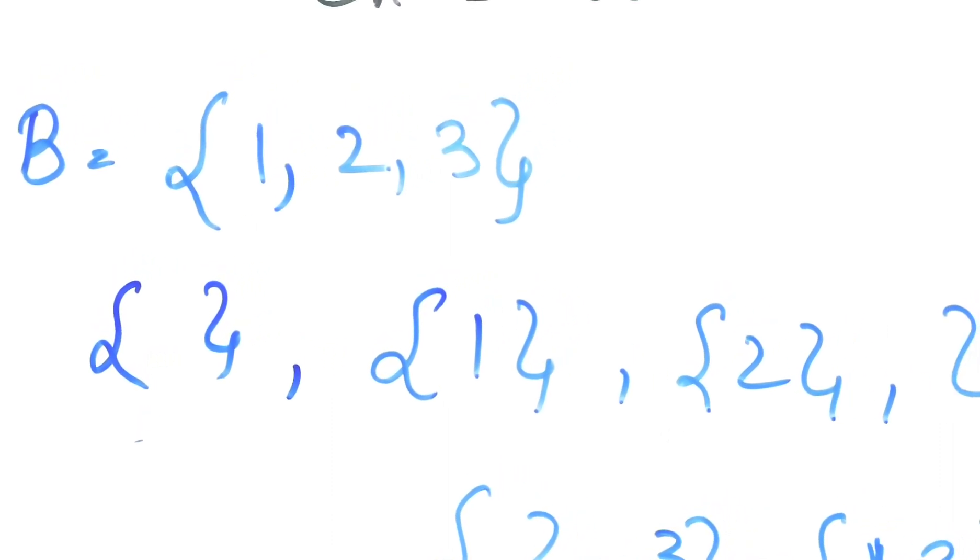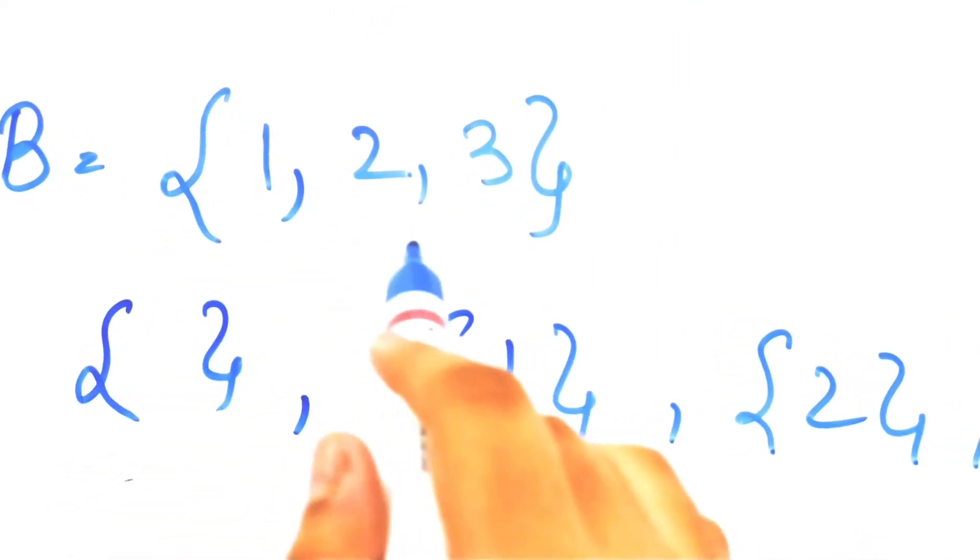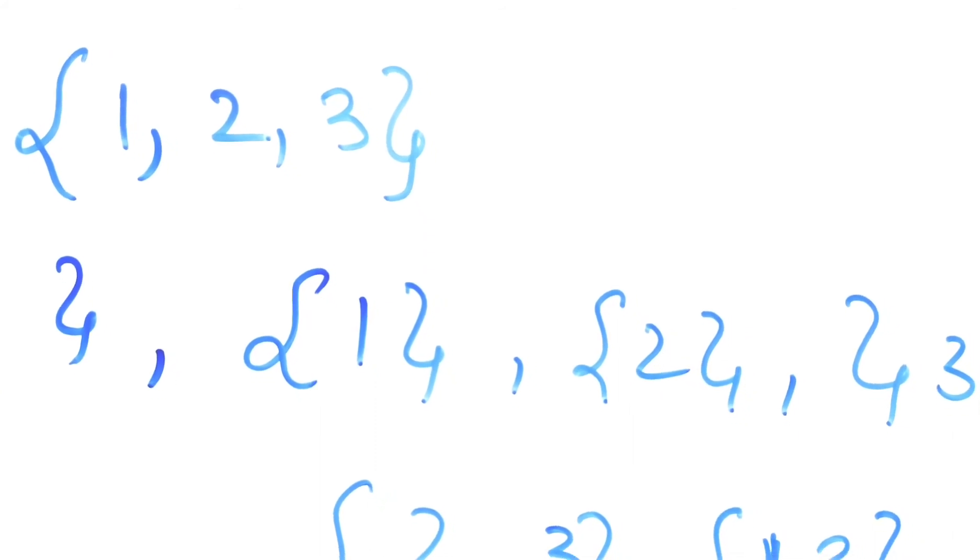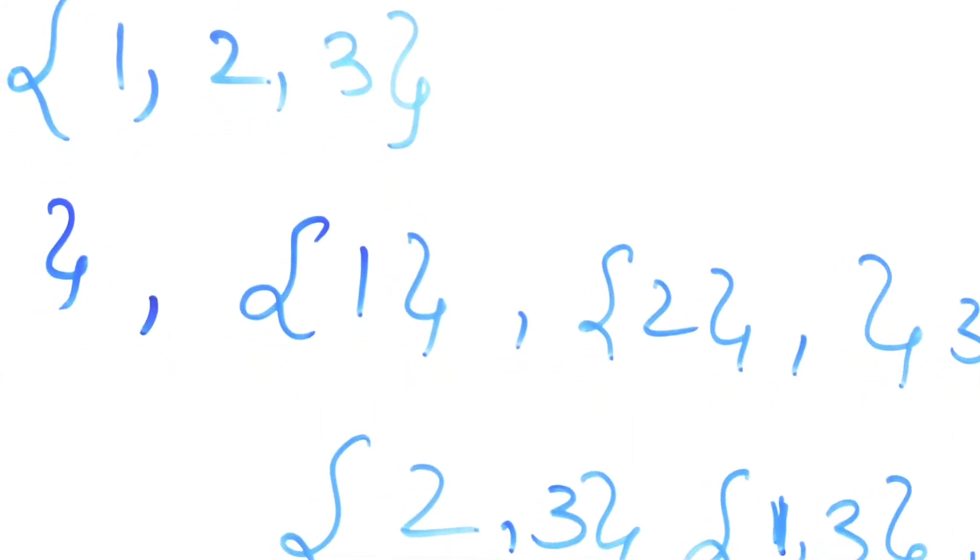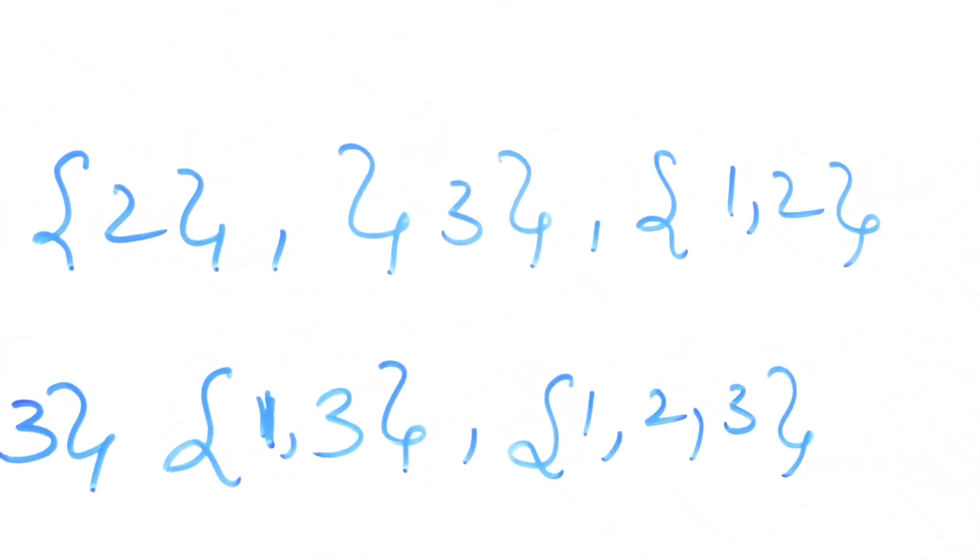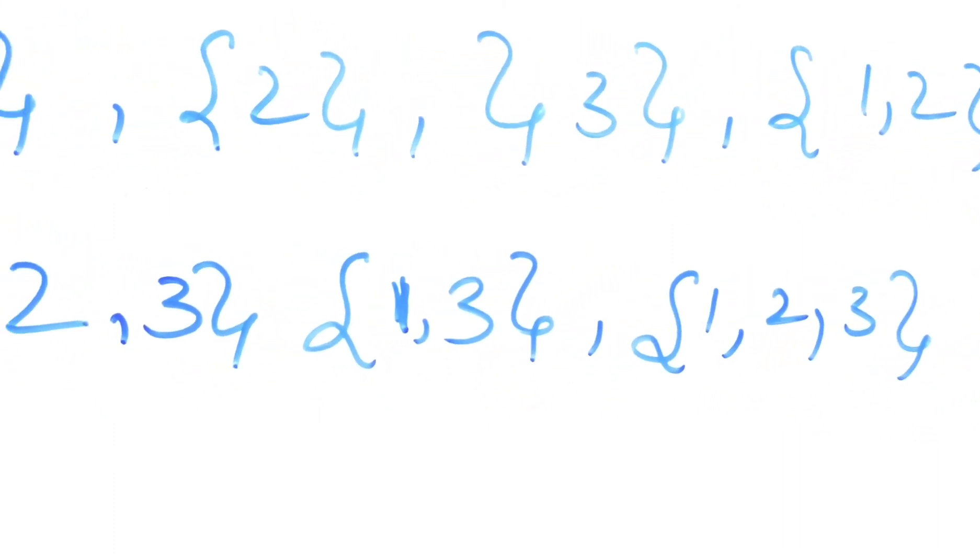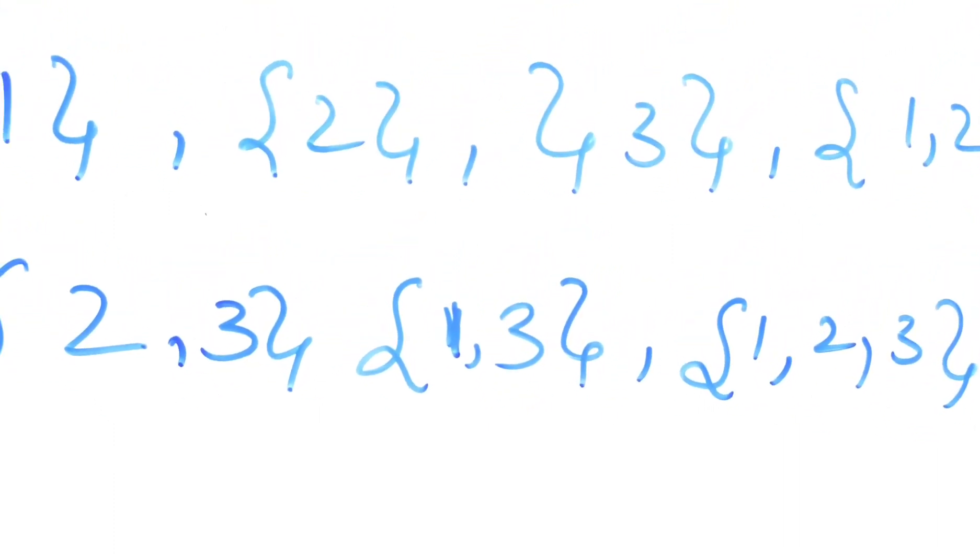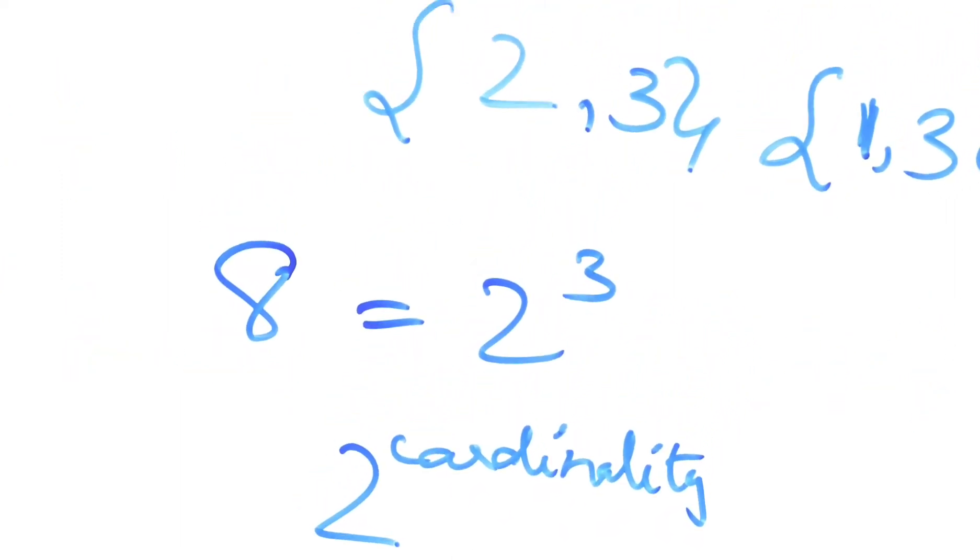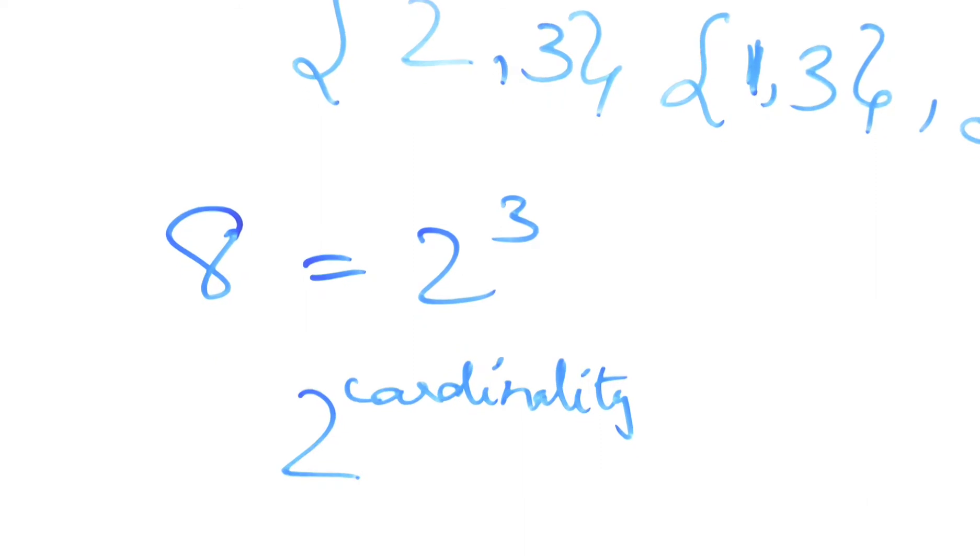Let's try out one more set. Let's say we have set V with elements 1, 2 and 3. Now what would all the subsets be? We will have the null set first, then just 1, just 2, just 3, then 1, 2, then 2, 3, then 1, 3 and then 1, 2, 3. How many subsets did you get? 8, right? 8 is nothing but 2 raised to 3. The same thing again, we got 2 raised to cardinality.